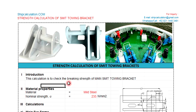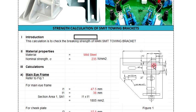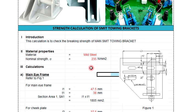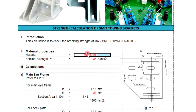This simple calculation is based on classification rules formulas. The material we are using here is mild steel, and the minimum yield strength is 235 MPa. You can also use high-tensile steel at 355 MPa if you don't want to increase the thickness of the main eye frame when something fails in the calculation, to increase the capacity strength of this Smith bracket.